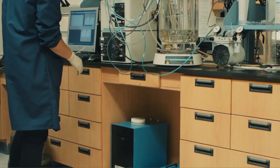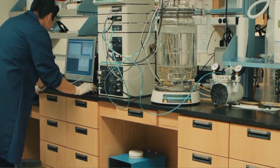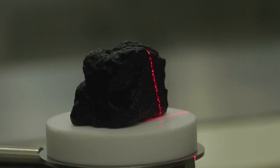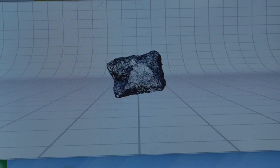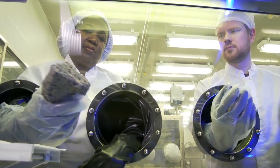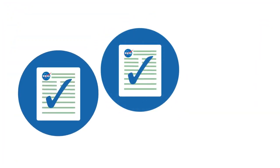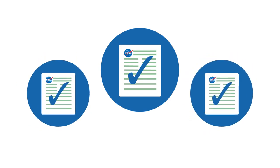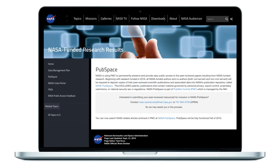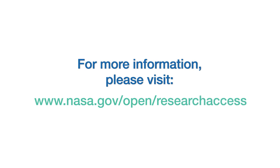NASA has developed an agency plan and associated policy outlining a framework for activities to increase public access to scientific publications and digital scientific data resulting from NASA funded research. NASA funded authors and co-authors will now deposit copies of their peer-reviewed scientific publications and associated data into NASA's publication repository, PubSpace. For more information on NASA's plans for public access to results, please visit www.nasa.gov/open/research-access.